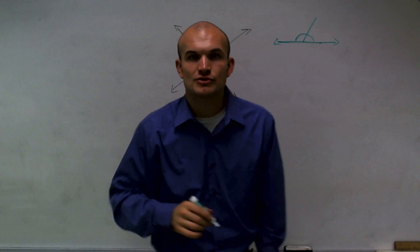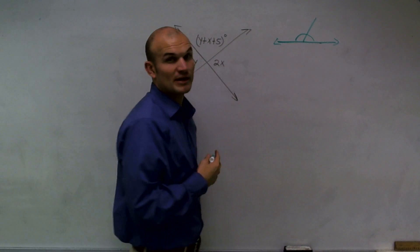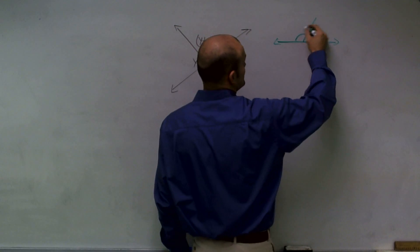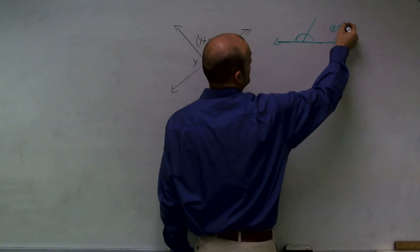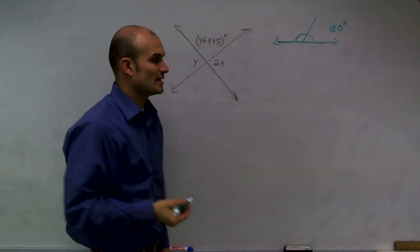When you have two angles that add up to a straight line, we call these supplementary angles. These two angles add up to a straight angle, which is 180 degrees.